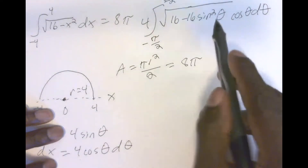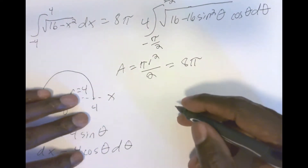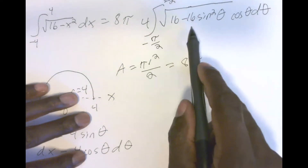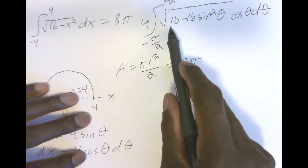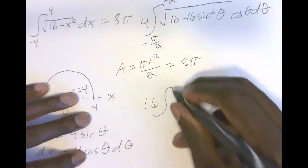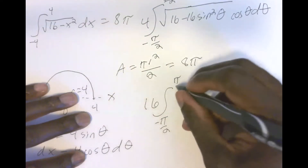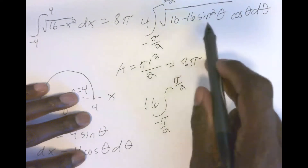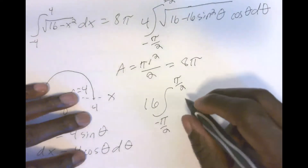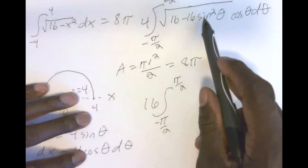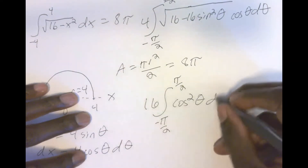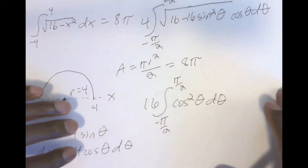Now let's do some algebraic and trigonometric manipulation. I'll factor out 16 from inside the radical, leaving one minus sine squared theta. Taking the square root of 16 gives four, and multiplying by the other four gives 16. Inside the radical, one minus sine squared theta equals cosine squared theta, and the square root of cosine squared theta is cosine theta. So cosine theta times cosine theta gives cosine squared theta, and we need to integrate 16 cosine squared theta d theta from negative pi over two to pi over two.